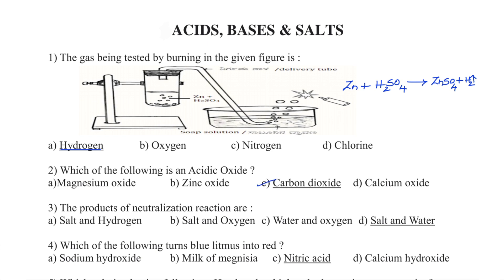Acidic oxides are the oxides of non-metals. Magnesium is a metal, so its oxide is basic in nature. Zinc oxide is also a metallic oxide, so it is basic in nature. Carbon dioxide is an oxide of a non-metal, so this is acidic in nature. Calcium oxide is again a metallic oxide, so it is also a basic oxide. Options A, B and D are basic oxides. Carbon dioxide is the only acidic oxide in the given options.